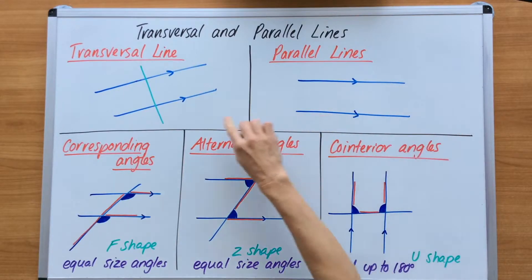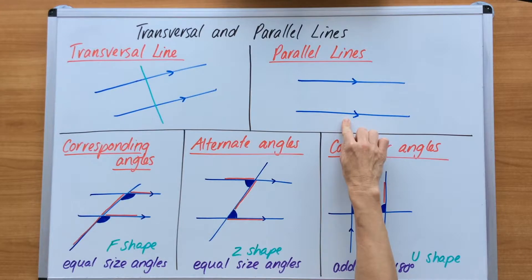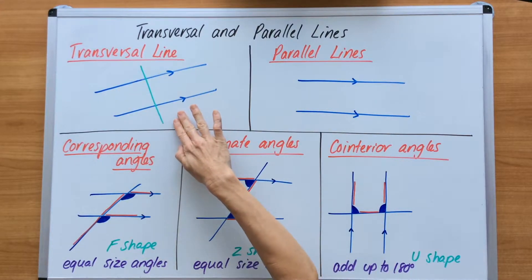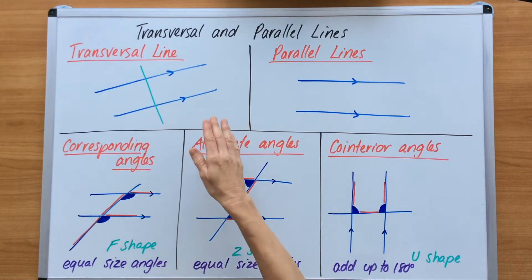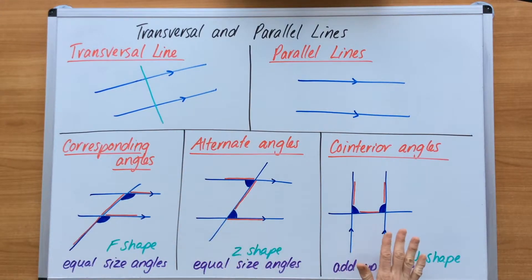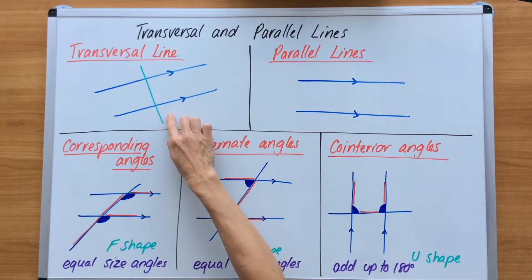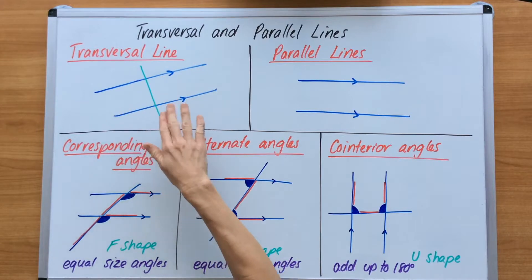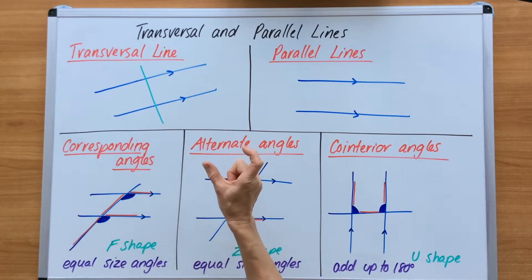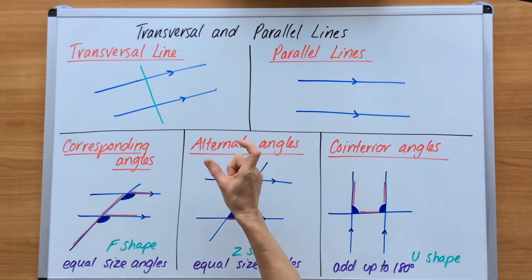When transversal lines cut through parallel lines, we get quite a few different types of patterns of angles where some of them are identical to each other. We're going to take a look at corresponding, alternate, and co-interior angles and we're going to prove some points based on how we get some patterns with angles — some identical and some equalling up to a certain degree like 180.